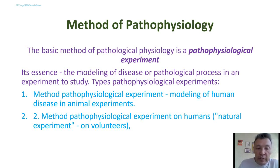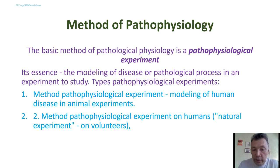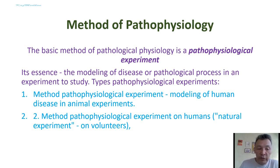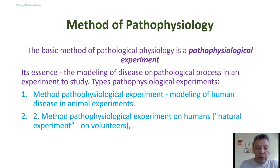Methods of pathophysiological experiments include modeling of human diseases in animal experiments, and natural experiments on volunteers. A pathophysiological experiment consists of three phases: the physiological phase studying healthy body function, the pathophysiological phase modeling disease or pathological processes, and the experimental therapy phase studying the use of experimental therapy and restoration of function.